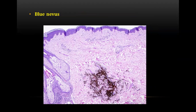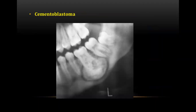In blue nevus, pigment-producing cells are spindle-shaped and fusiform dendritic cells. These cells are confined to the connective tissue and are separated and parallel to the normal overlying epithelium. These cells have less tendency to transform into a malignant lesion.